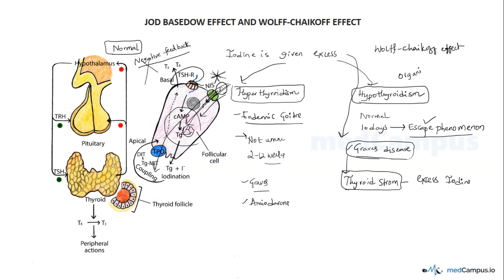A similar situation occurs with amiodarone, which is an iodine-containing anti-arrhythmic drug. Initially, because of the iodine supplementation, there will be an increase in hyperthyroid levels — the Jod-Basedow effect. Later on, the Wolff-Chaikoff effect takes place, leading to iodine-induced hypothyroidism. This is why when you read the side effects of amiodarone in anti-arrhythmic drugs, both hyper- and hypothyroidism are listed. Amiodarone causes both the Jod-Basedow effect initially — hyperthyroidism — followed by hypothyroidism due to the Wolff-Chaikoff effect.